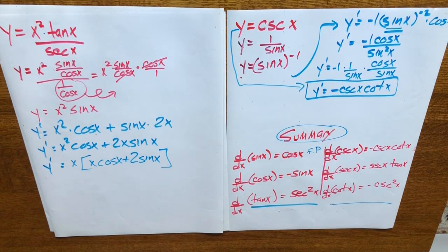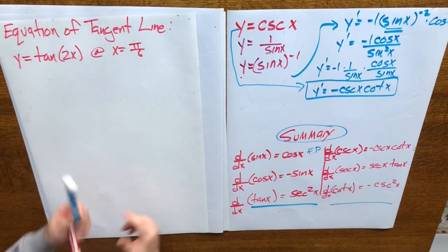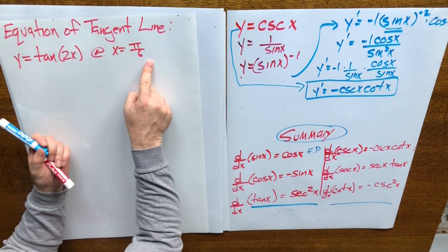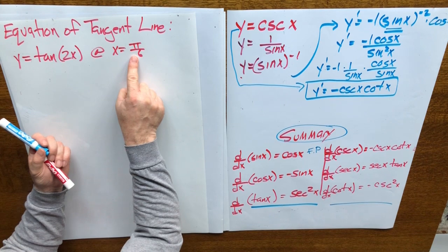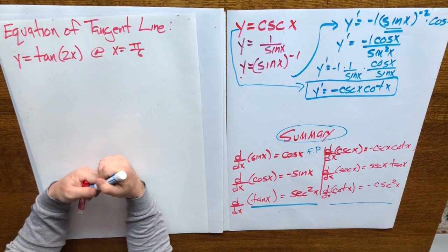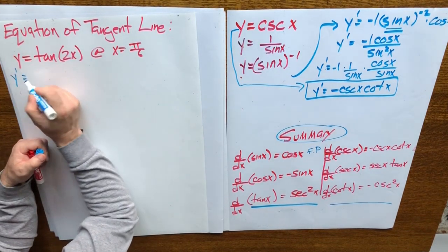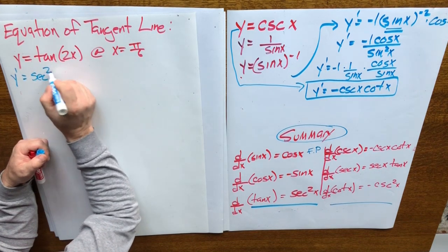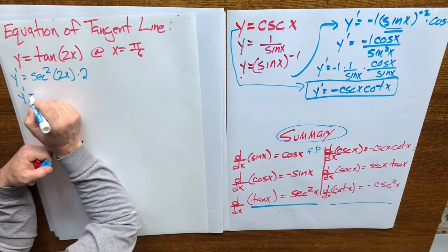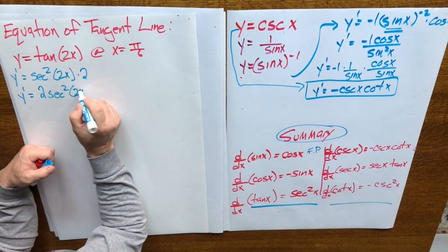Here's the next question, right from the note: find the equation of the tangent line for y equals tan 2x at x equals pi over 6. We have a value of x, we need to find a value of y, find the slope by taking the derivative, then find the equation of the tangent line. Let's start by finding the derivative: y prime equals secant squared 2x times 2, so y prime equals 2 secant squared 2x.